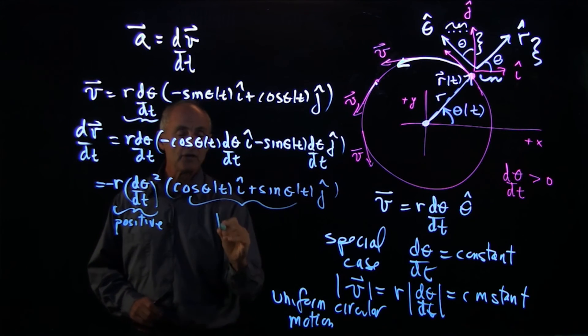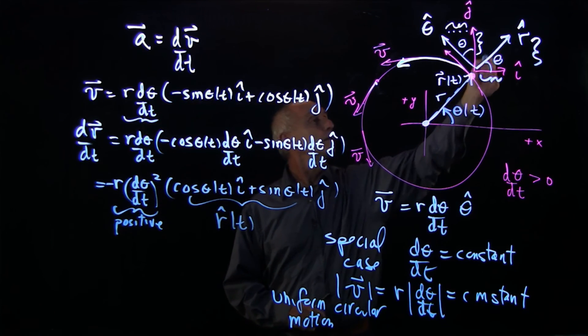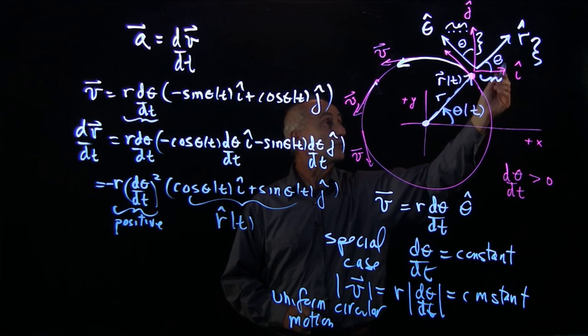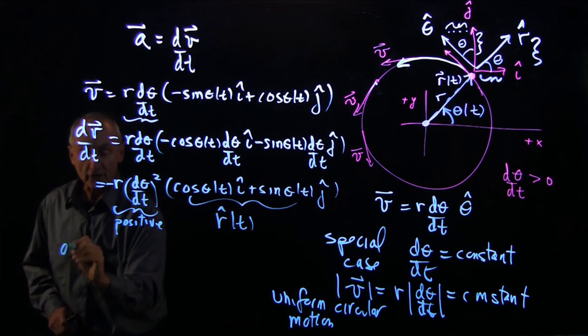Now, what we have here is the unit vector r hat t. r hat has a cosine adjacent in the i hat direction and a sine component in the j hat direction. So our acceleration...